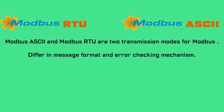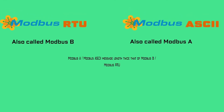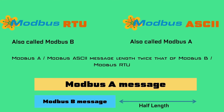ASCII and RTU are the two transmission modes for Modbus and both differ in message format and error checking mechanism. ASCII mode uses ASCII characters to begin and end messages, whereas RTU uses time gaps of 3.5 character times of silence for framing messages. Modbus ASCII is also called Modbus A and Modbus RTU is called Modbus B. Modbus A has a typical message length that is about twice the length of the equivalent RTU message.